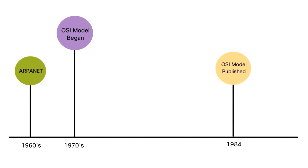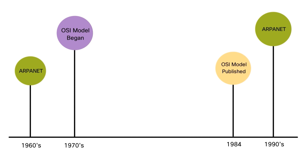ARPANET was developed in the 70s by BBN. It was funded by ARPA, and then later that became DARPA, the Defense Advanced Research Projects Agency. Eventually, it became what we know today as the Internet. It was in the 90s that the name ARPANET was deprecated, or no longer used.